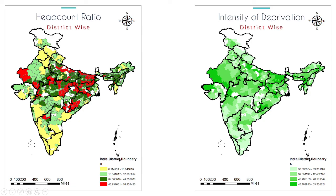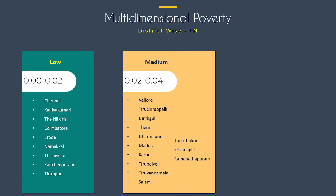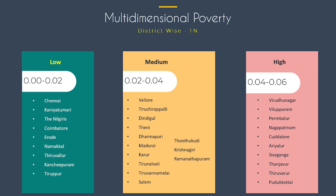For Tamil Nadu specifically, districts are classified into three categories: low, medium, and high MPI. Chennai, Kanyakumari, Nilgiris, Karur, and Kancheepuram fall in the low category. Metropolitan and industrialized areas tend to have lower poverty levels. High MPI districts are coastal regions or areas with high agricultural activity. Medium MPI districts appear to be transitioning from agriculture to industrial development.